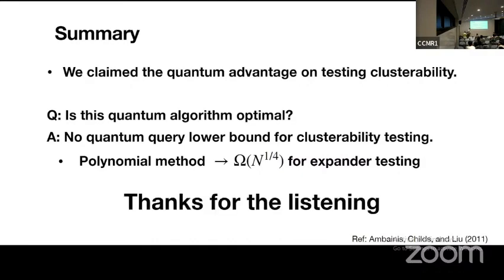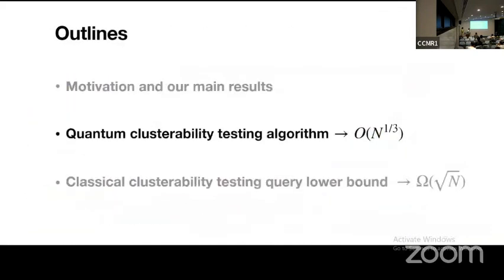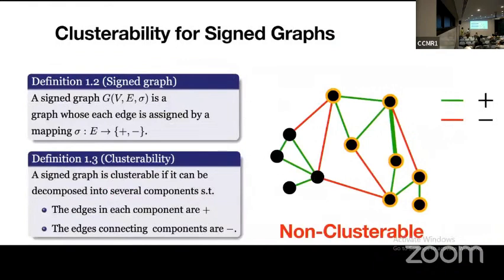Thanks for listening. Thank you for the interesting talk. Any questions? I have a question. So in your clusterability problem, you don't care about the number of clusters. Does it make any sense to put some limitations on the number of clusters you are considering? You mean in the definition of clusterability? Yes, it would just be a different problem. We don't care how many clusters we find, but once we can find such clusters — and there can be many clusters proportional to capital N — then the graph is classable. Okay, thank you.